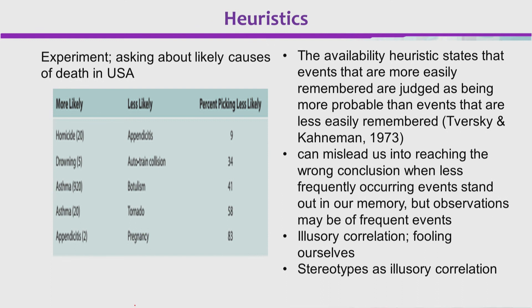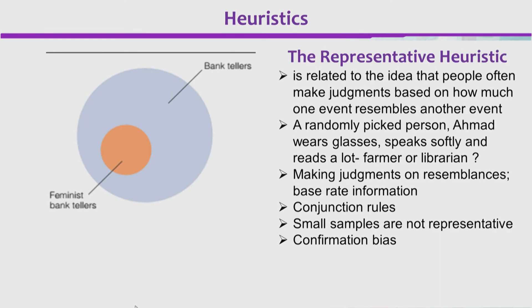Estimate jo hai, wo forty-one logon ne less likely pick kiya. Halanke estimate jo hai, wo 920 deaths ki wajah hai US mein. Toh yeh ek illusory conclusion hum bana lete hain, kyunke hum us cheez ke baare mein zyada sun chuke hote hain.